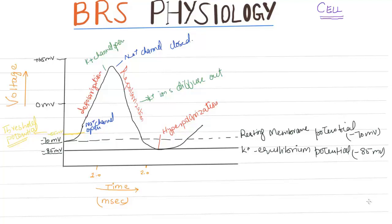Upstroke of the action potential: inward current depolarizes the membrane to threshold. Depolarization causes rapid opening of the activation gates of sodium channels, and sodium conductance promptly increases. Sodium conductance becomes higher than potassium conductance, driving the membrane potential toward the sodium equilibrium potential of +65 mV. Repolarization: opening of potassium channels increases potassium conductance to a level higher than at rest. Tetraethylammonium blocks these voltage-gated potassium channels. The combined effect of closing sodium channels and greater opening of potassium channels repolarizes the membrane. Thus repolarization is caused by an outward potassium current, while the rapid upstroke depolarization is caused by an inward sodium current.